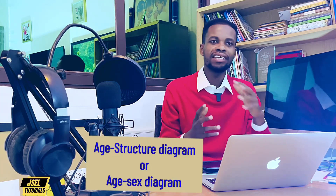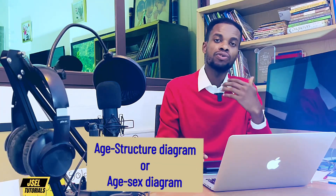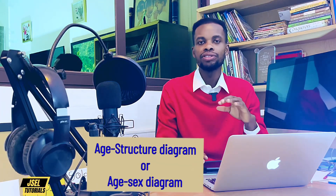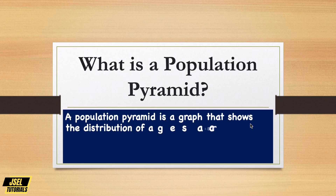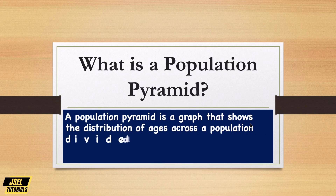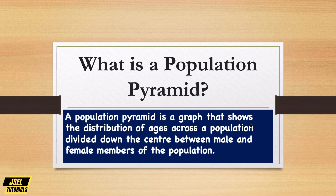Some also call it the age-sex pyramid. The population pyramid is a graph that shows the distribution of ages across a population, divided down the center between male and female members of the population. It takes into consideration age and sex — these are two key breakdowns in the study of demography.